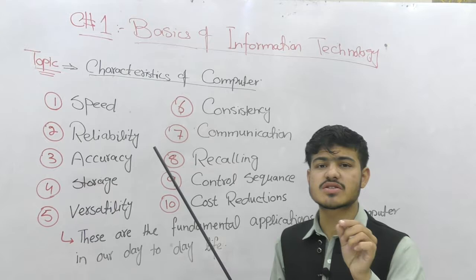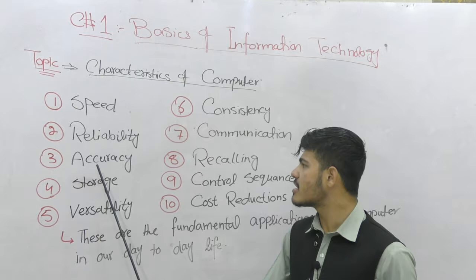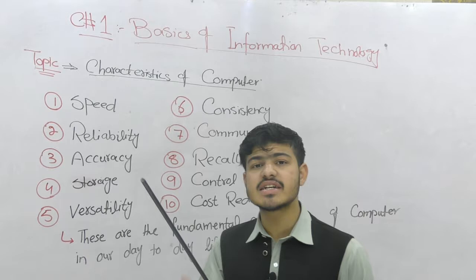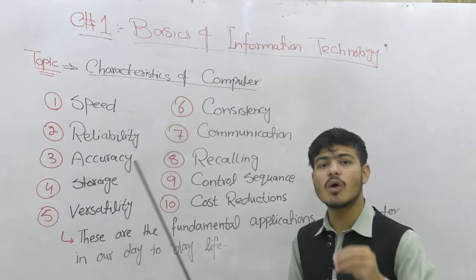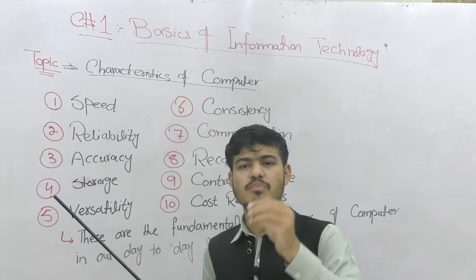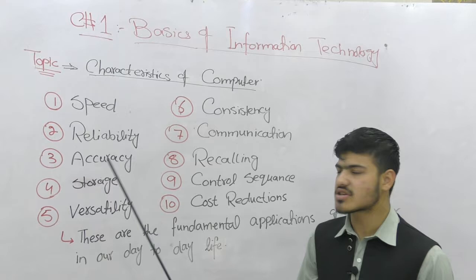There can be a chance of mistake if it is performed by humans. The result can be wrong if the data given to the computer is not correct. The accuracy by the computer is correct when humans manually give correct data to the computer. If the data is wrong, then the computer result will be wrong.